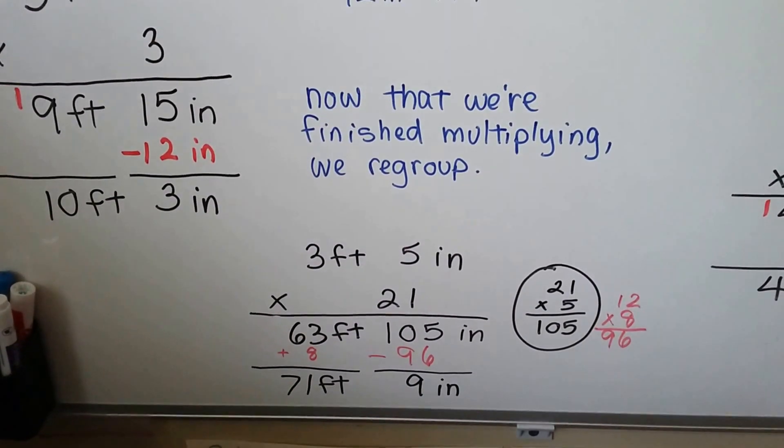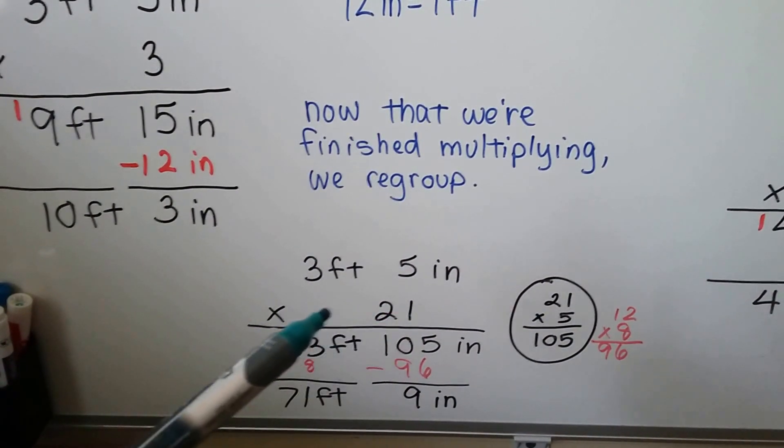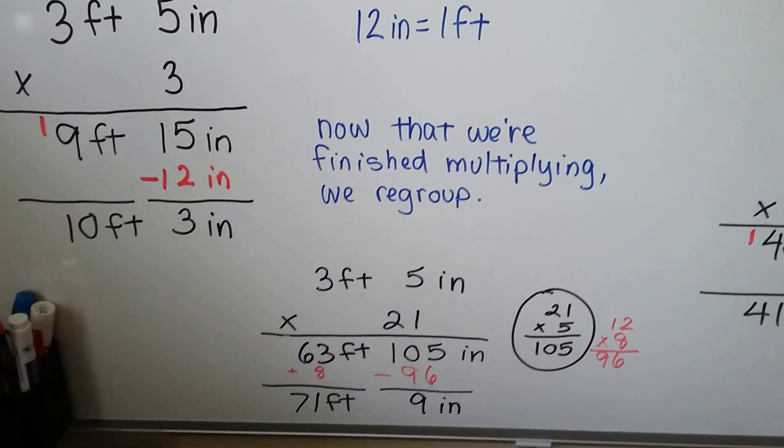It gives us 71 feet 9 inches. So you can do it even by multiplying double digits or even triple digits. Just do a little math on the side.